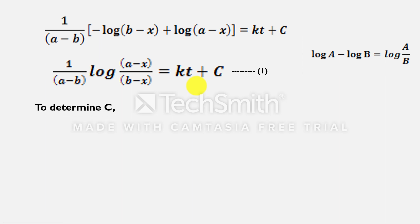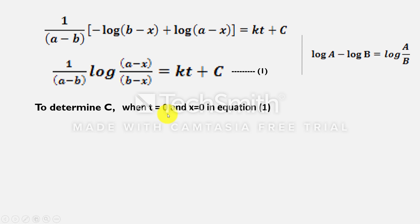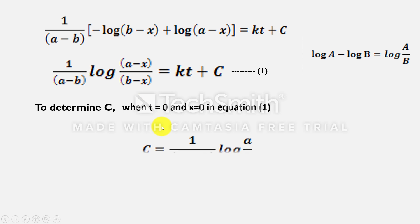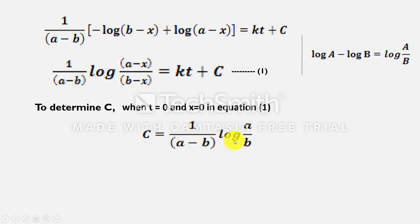Now we can find the value of the integration constant. Taking when t = 0, x = 0 — that is before starting the reaction — substituting into equation 1, the kt term becomes 0 and x = 0, so C = 1/(A−B) × log(A/B).